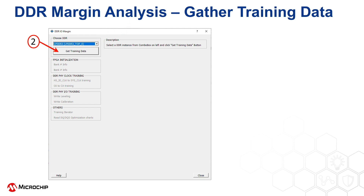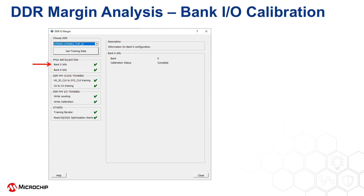Step two is to click on Get Training Data. The tool gathers the resultant data from the memory controller's DDR training process. It shows successfully completed training steps with green checkmarks. It also shows the results of calibration from the IO bank that the DDR interface resides in. In this case, the training data opens showing the calibration status as complete.